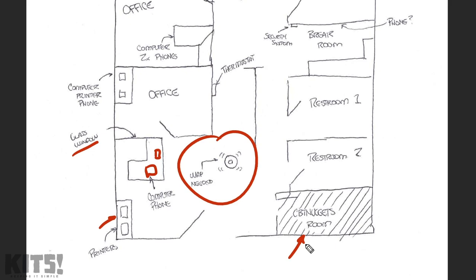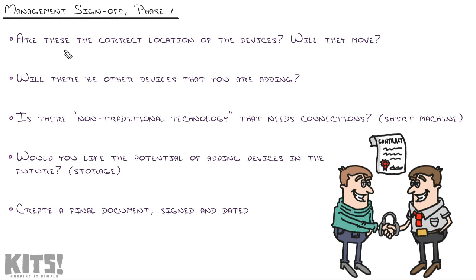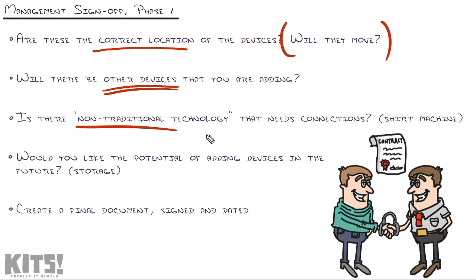When communicating with management, I want a full sign-off — expectations fully set that these are all the devices on the network. As you sit down and talk with management, they're going to say: 'Oh actually, we don't want that computer over there — put it over here,' or 'We're moving somebody else into that office.' This is the time to have the conversation, not after we've done all the cabling. In this phase one sign-off, you want to find out: are these the correct locations of devices? Are they going to move? Will there be other devices added — more computers, laptops, IP phones? Start thinking about non-traditional technology that needs connections: that shirt machine, thermostat, security system, IP surveillance — stuff you don't usually think about when you think of IT.